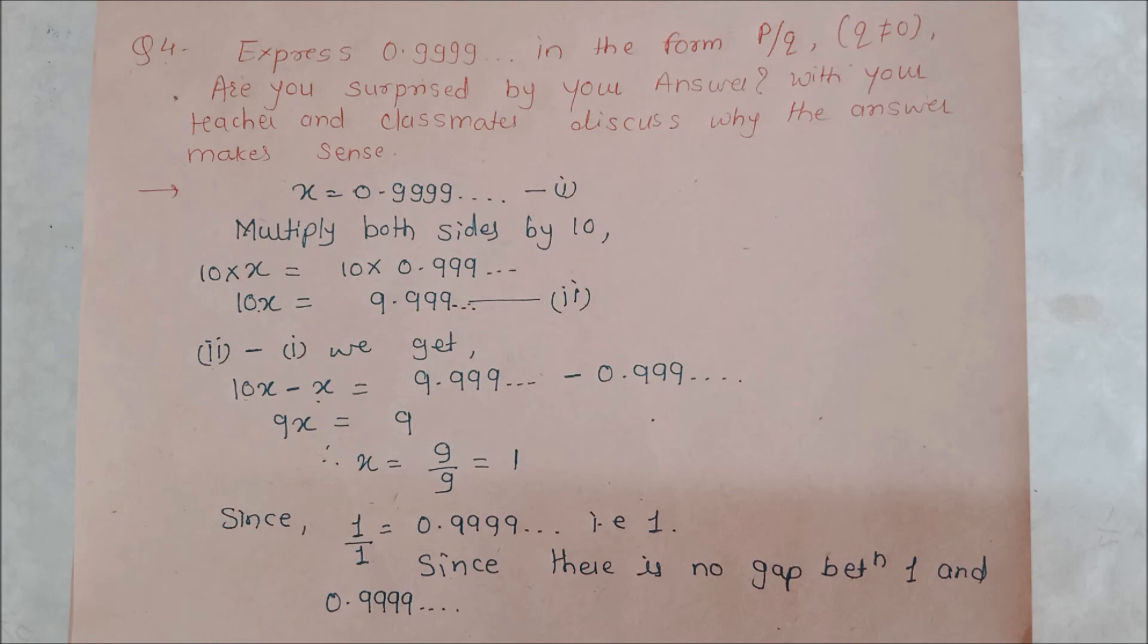So this was a slightly surprising answer because the P and Q values we got were both the same, that is 1 upon 1, 9 upon 9 which we can also write as 1. And 0.9999 dot dot means approximately 1 only. So in this way question number 4 is complete here. Further questions we will cover in our next video. Thank you so much, thanks a lot.